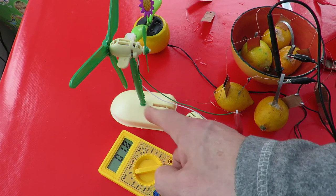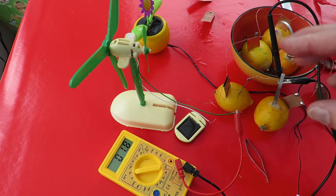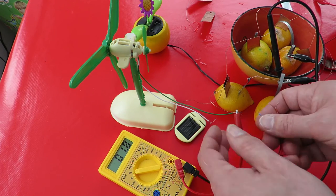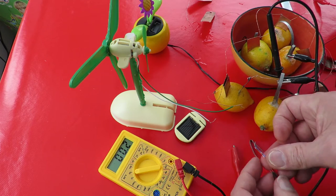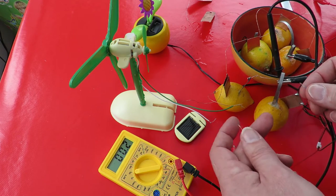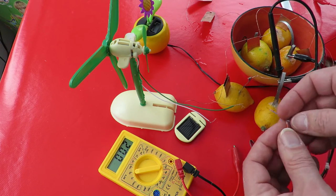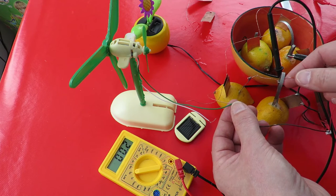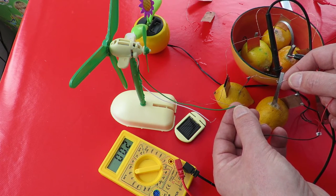Solar panel runs it. 1.5 volt battery runs it. And if we connect this up to the little flower. If I do it the right way round. Wrong way round. There we go. They've got plenty to make the flower work.